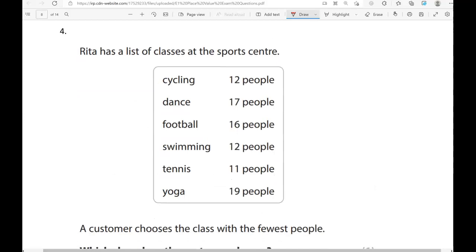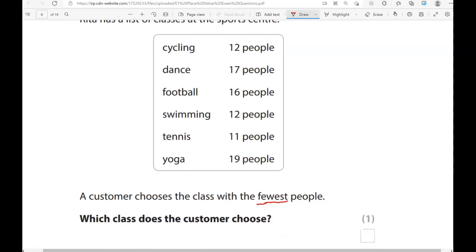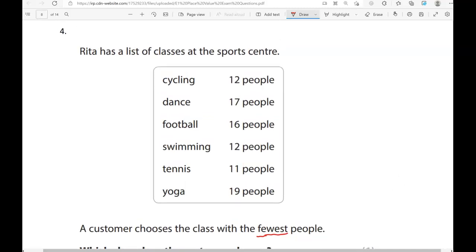Rita has a list of classes at the Sports Centre. Cycling 12 people, dance 17 people, football 16 people, swimming 12 people, tennis 11 people, yoga 19 people. A customer chooses the class with the fewest people. So we're looking for the lowest number. Which class does the customer choose? Which number is the lowest out of 12, 17, 16, again 12, 11, and 19? I can see all of these numbers are greater than 10. So when you start counting from 10, the next number will be 11, and we can see 11 here, so that is the lowest of these numbers. So we're going to write tennis.